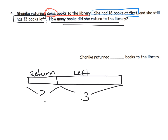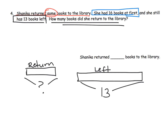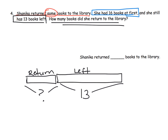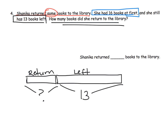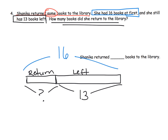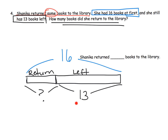We label the kept portion 13. So we have two pieces: the part she returned and the part she still has. Then we go back and note she had 16 books at first — so that's the total right here: 16. The total is made up of some she returned and some she kept. Now that we've modeled it, we can see the missing value can be found either by subtraction — since we have the whole and one part — or as an addition problem with a missing addend.